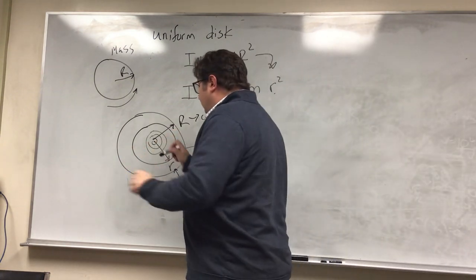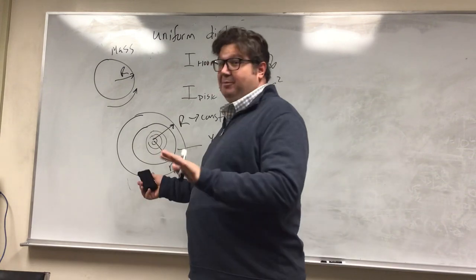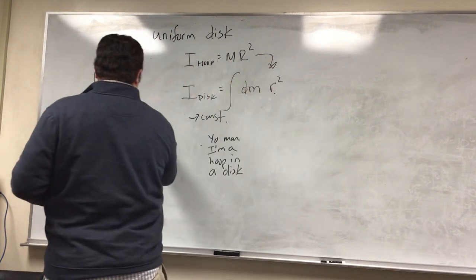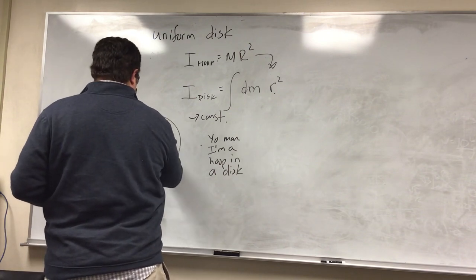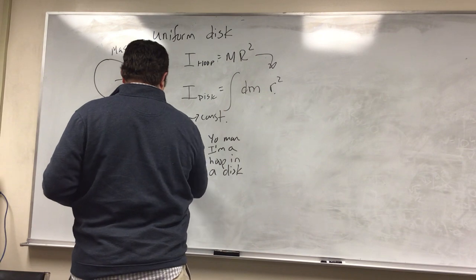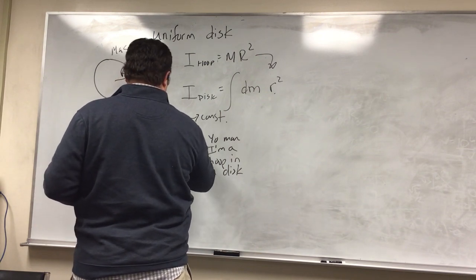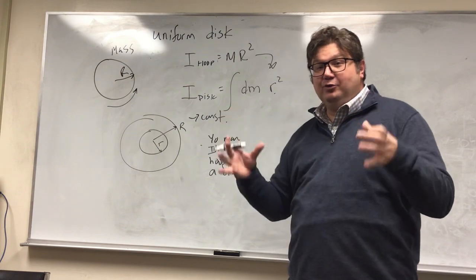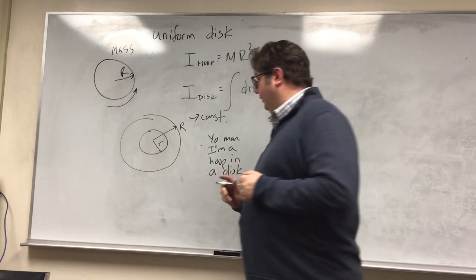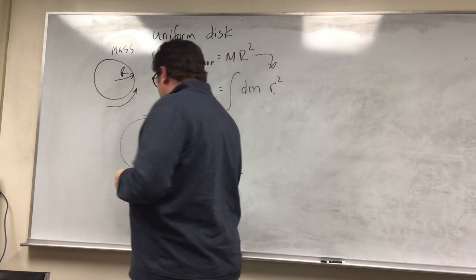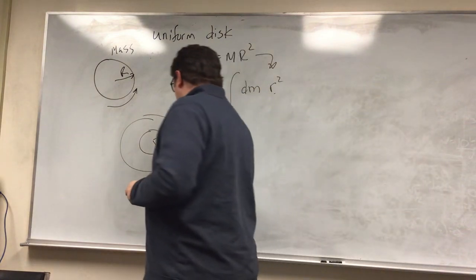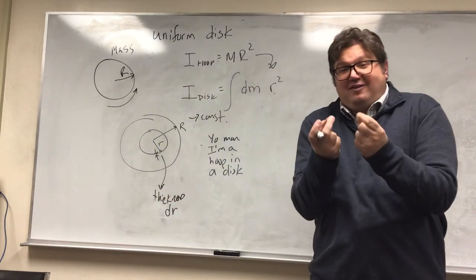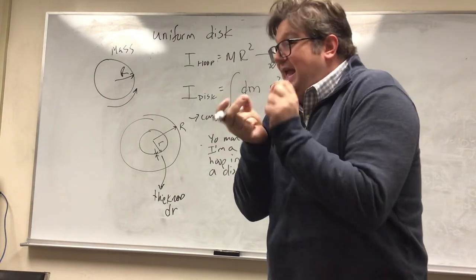So we have a bunch of hoops in our disc. So I have one infinitesimally small hoop inside my uniform disc. Now here's where it gets a little weird. Here, this disc has a certain thickness. It has a thickness dr. That hoop is actually somewhat thick. It's infinitesimally thick.